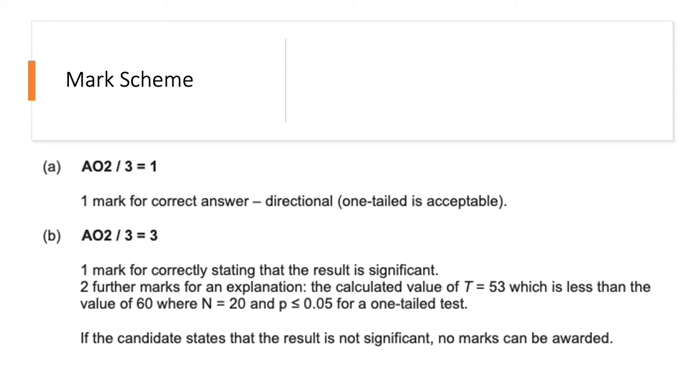So one mark for saying that it was directional. It was a one-tailed hypothesis because it told us the direction that the results were going to go in. It told us that memory would be worse if people were on a restricted diet. And then for B, you get one mark if you said that the result was significant and then two further marks for explaining this. So the calculated value of T was 53, which was worked out for you. And this is less than the value of 60, which was the critical value. The number of participants was 20 and the significance level was P is less than or equal to 0.05 for a one-tailed test. Therefore, the result was significant.